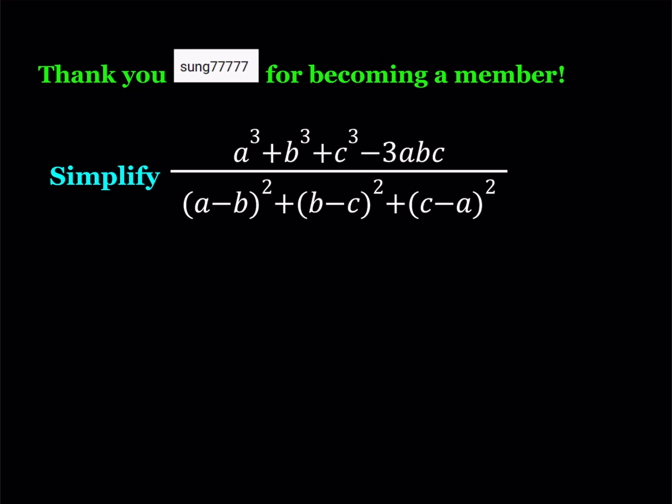We have an algebraic expression and we're going to simplify it. So we have a cubed plus b cubed plus c cubed minus 3abc divided by the sum of the squares of a minus b, b minus c, and c minus a.